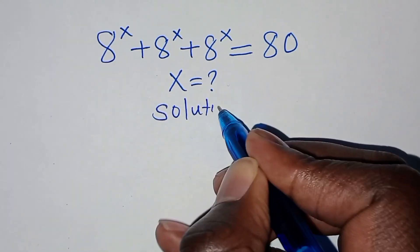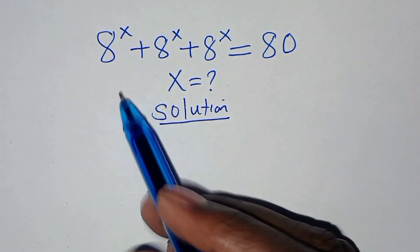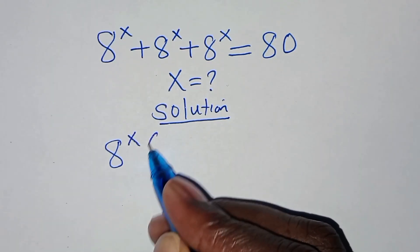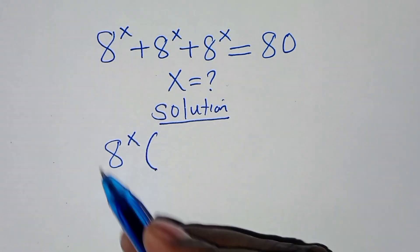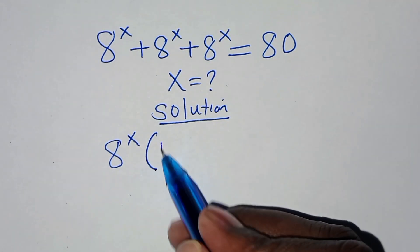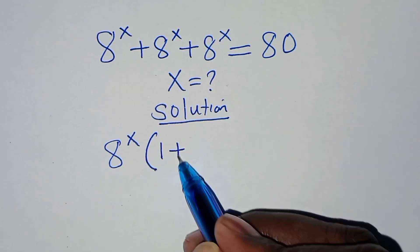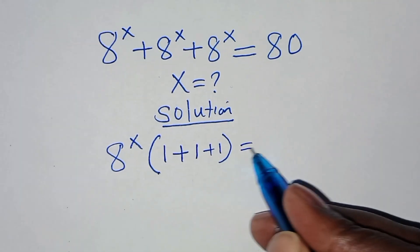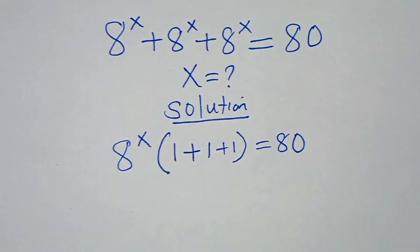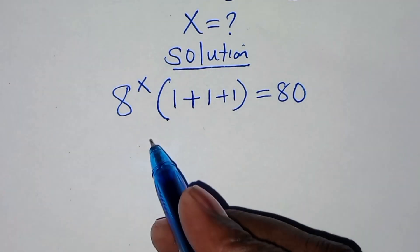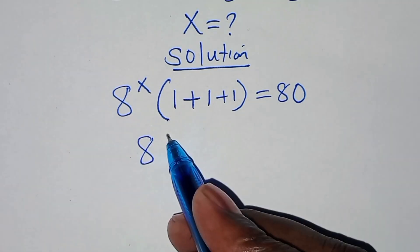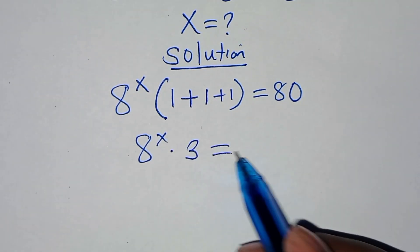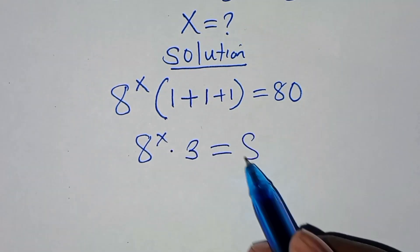From here, you find that 8 to the power x is common, so we can factor out 8 to the power x, so that you'll have 8 to the power x into the parentheses 1 plus 1 plus 1. This is equal to 80. We have 8 to the power x times 1 plus 1 plus 1, this is 3, and this is equal to 80.